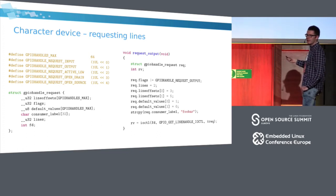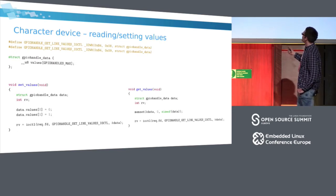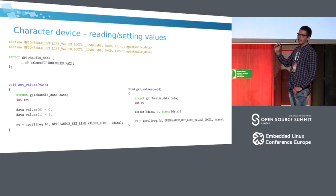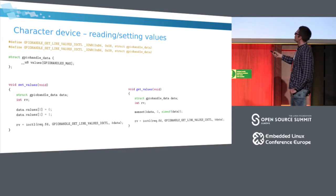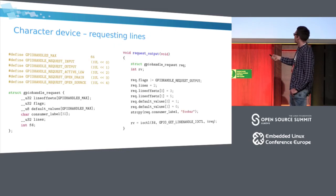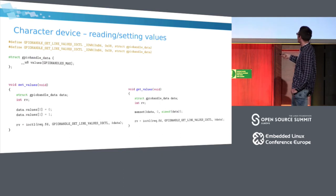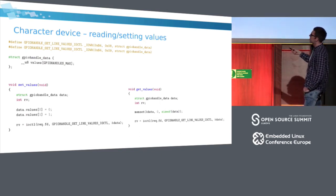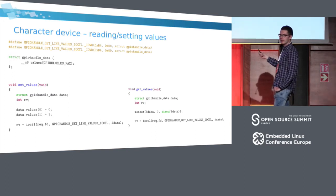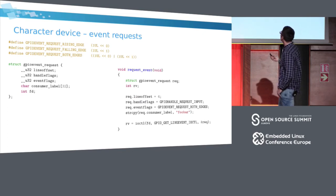To set or get values, use the gpiohandle_data structure which simply contains the values array. These values correspond to the lines previously requested. Set the values to new values — in this example we invert them — and call GPIO_GET_LINE_VALUES_IOCTL or GPIO_SET_LINE_VALUES_IOCTL using the handle file descriptor. For get, the structure is filled for us by the kernel; for set, we fill it ourselves and pass the data to the kernel.